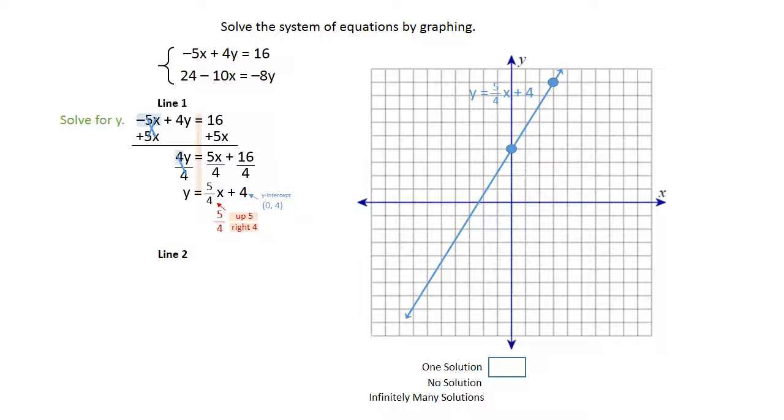So let's take the second line, write that one down, and we're going to solve for y. What I notice on this line is the y is on the right-hand side of the equal sign, so you can just swap the sides. Write your negative 8y on the left-hand side and put the 24 minus 10x on the right-hand side. It doesn't change anything.